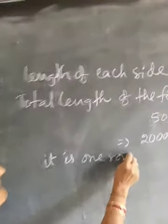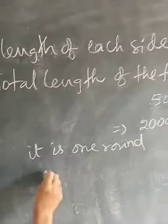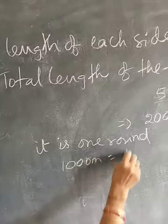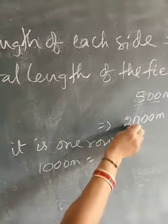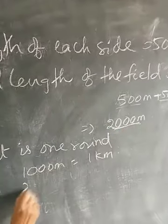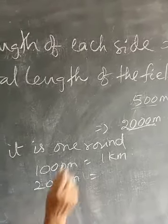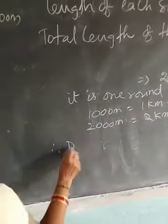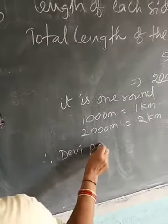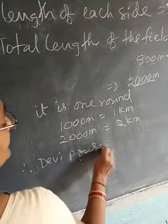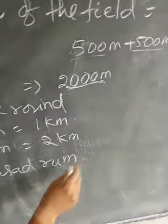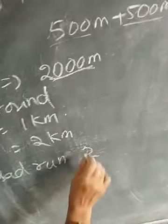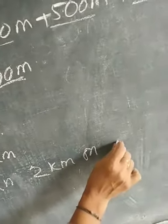As you know from every class, 1000 meters equals one kilometer. Here we have 2000 meters, and 2000 meters equals two kilometers. Therefore, Devi Prasad ran two kilometers, which is exactly the two kilometers on the doctor's advice.